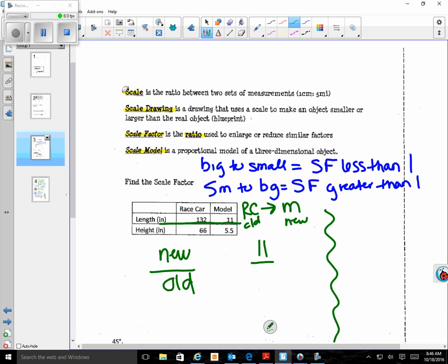My model would be the new because that's what I'm going to, and the race car would be my old. So my new is 11 and my old is 132. Now I just need to simplify this fraction. I would divide them both by 11, and that gives me 1/12. So my scale factor if I am going big to small in this situation with my race car and my model is 1/12.